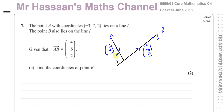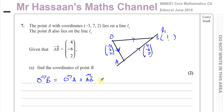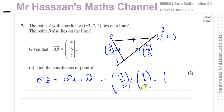We need to find the coordinates of point B. The coordinates of B will be given when we find the position vector O to B. We can see that if we go from O to A and then from A to B, we get O to B. So O to B equals O to A plus A to B: (−3, 7, 2) + (4, −6, 2) = (1, 1, 4). So the coordinates of point B are (1, 1, 4), and that's the answer to part A.